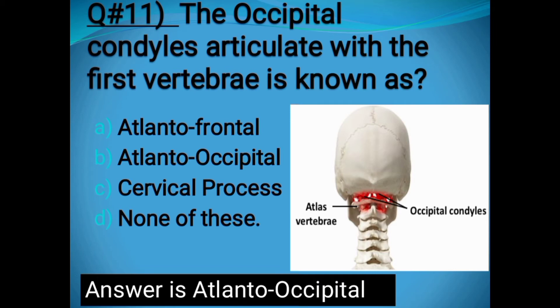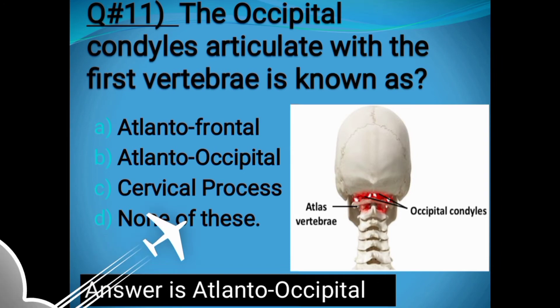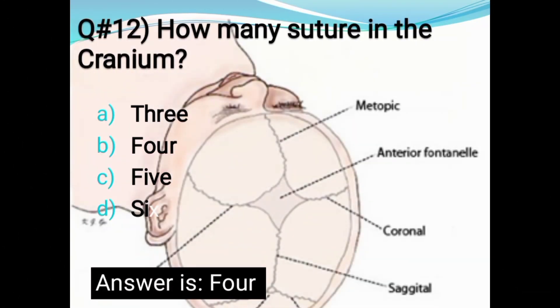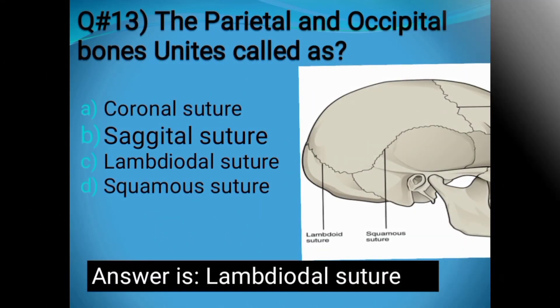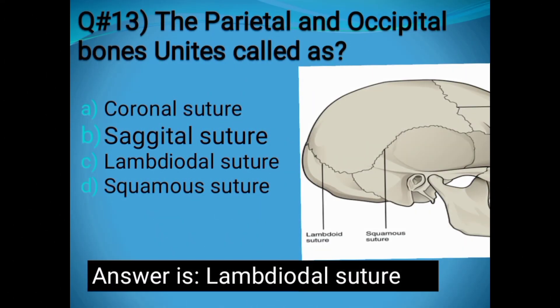Question number twelve: How many sutures are in the cranium? Options: 3, 4, 5, or 6. The correct answer is 4 — there are 4 prominent sutures in the cranium. Question number thirteen: The parietal-occipital bone joint is called: Coronal suture, Sagittal suture, Lambdoidal suture, or Squamous suture. These are the four types of sutures.